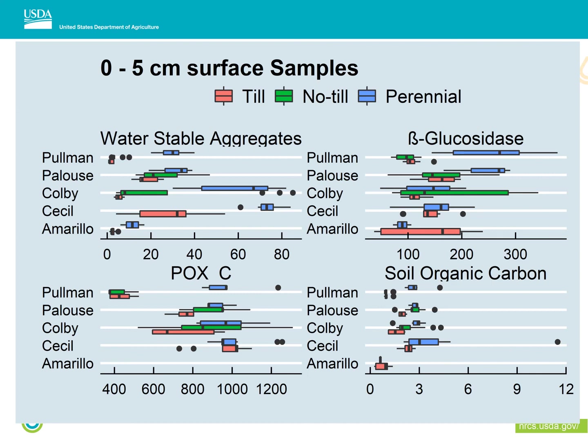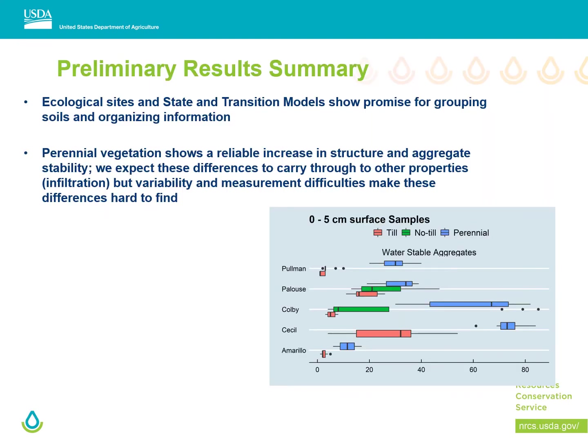We can start to look at these benchmarks for other properties as well — though not carefully enough yet to put specific potential values on them — but we can tell that the system and the soil being evaluated matter for things like water-stable aggregates and even total soil organic carbon. Eventually we'll be able to attach these benchmarks to soil survey as information usable for producers and planners. Ecological sites and state-and-transition models show promise for grouping soils, but perennial vegetation shows a reliably predictable increase across everything we've measured, which is more distinct than differences within individual cropland management systems.